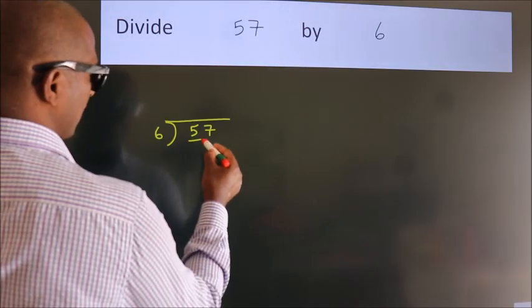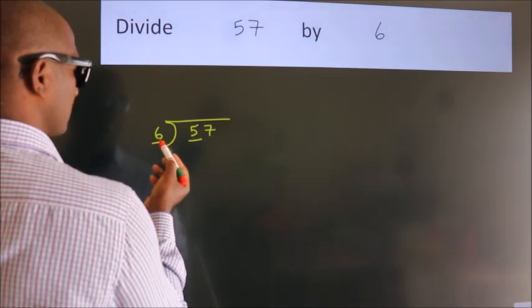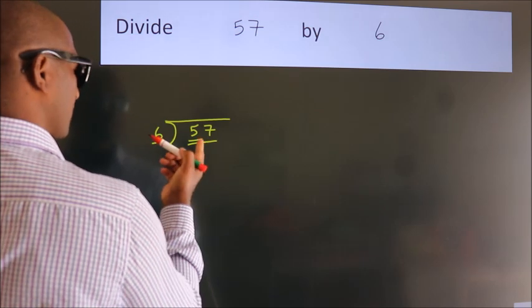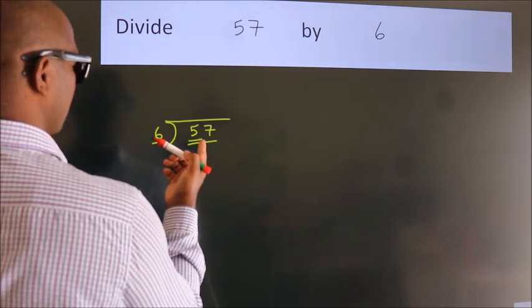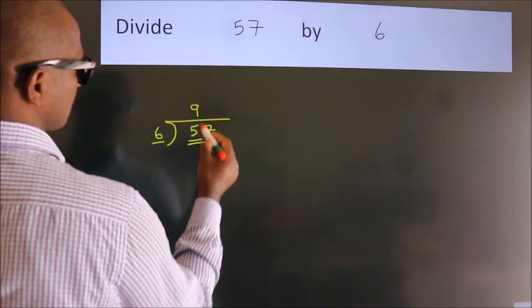Here we have 5, here 6. 5 is smaller than 6. So, we should take 2 numbers, 57. A number close to 57 in the 6 table is 6 nines, 54.